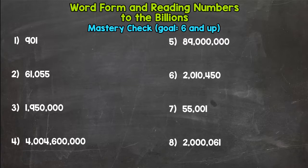Like I said, your goal is six and up correct. If you're here looking for a little more instruction or help with word form, I dropped a link to my instructional videos for word form and reading numbers to the billions in the description. So check those out first and then come back to the mastery check if you're not confident you can do these on your own yet.